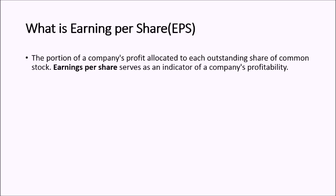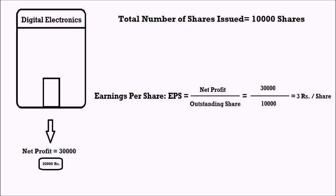Let's understand it with an example. Bob's company reported a profit of 30,000 rupees and the total number of shares issued is 10,000. To find what each stock has earned, divide 30,000 by 10,000 — where 30,000 is the net profit and 10,000 is the outstanding shares. The result is 3, meaning each share of the company has managed to earn 3 rupees from the profit of 30,000.